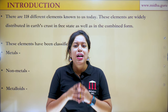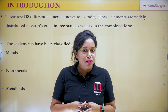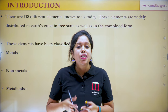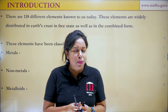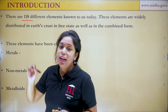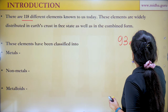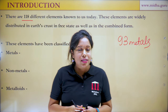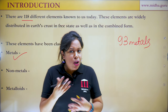Elements within the earth crust can be broadly classified into metals, non-metals, and metalloids, based on their physical and chemical properties. One interesting fact is that out of 118 elements, there are 93 metals, and the rest are either non-metals or metalloids.